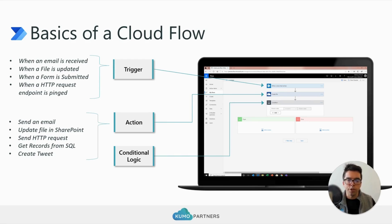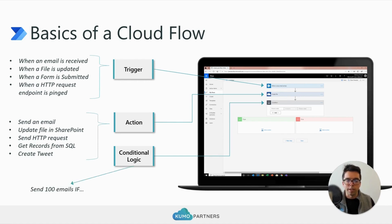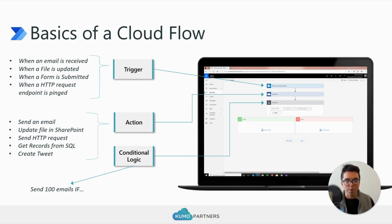The third domain is conditional logic. This is the idea that we can put in custom logic to look at data coming from the trigger or the action and perform various mechanisms of logic. For example, rather than sending just one email, you could loop and send 100 if a given condition exists. With great power comes great responsibility.